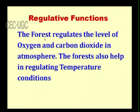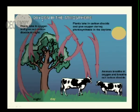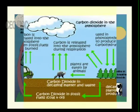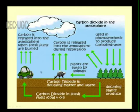The third is the regulatory function. The forests regulate the level of oxygen and carbon dioxide in the atmosphere and help in regulating the temperature conditions. The forests absorb carbon dioxide and release oxygen, fixing oxygen in the atmosphere. It is a cycle between forest and animal beings — animals take oxygen and release carbon dioxide, while forests take carbon dioxide and release oxygen. All animals and vehicles release carbon dioxide, which is taken by the forest.